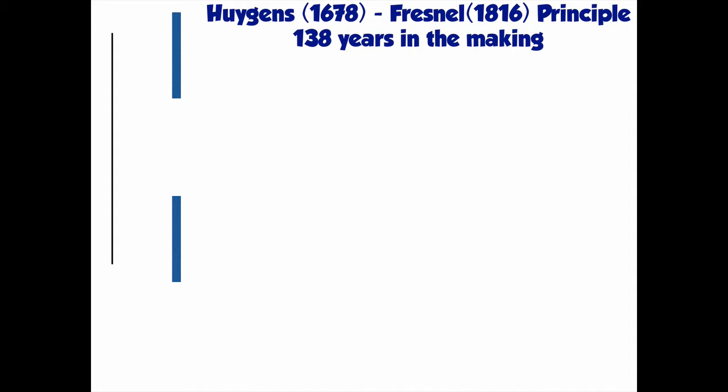In 1678, Christian Huygens comes up with a model for describing waves and wave motion. But he can't describe everything with it. Later, Augustin Jean Fresnel, in 1816 — 138 years later — comes up with a way of describing how it applies to single-slit diffraction, really.